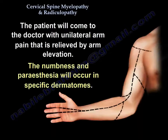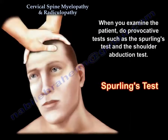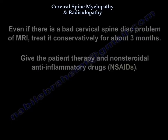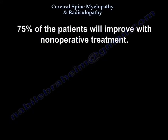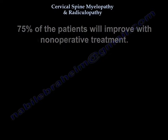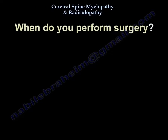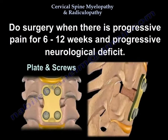The patient will come to you with unilateral arm pain relieved by arm elevation, and numbness and paresthesia in specific dermatomes. On examination, you will perform provocative tests such as Spurling's and the shoulder abduction test. Even with a bad cervical disc on MRI, treat conservatively for about three months with therapy and NSAIDs — 75% of patients will improve. Surgery is indicated for persistent pain of 6 to 12 weeks or progressive neurological deficit.